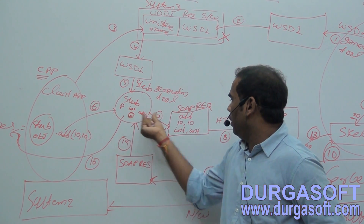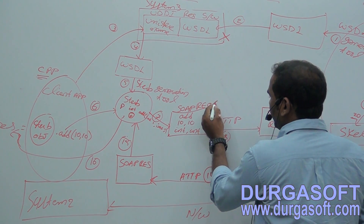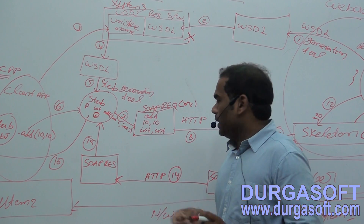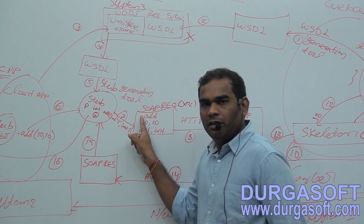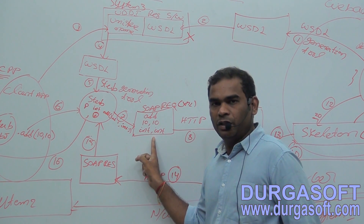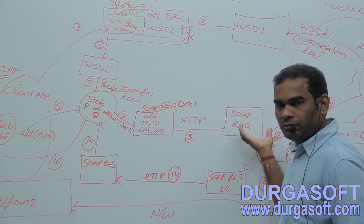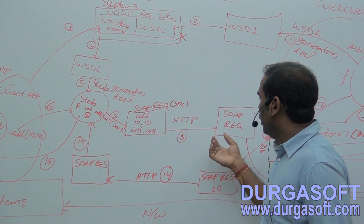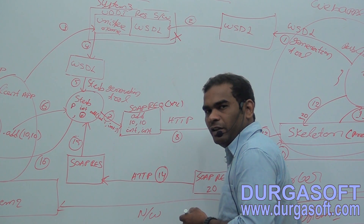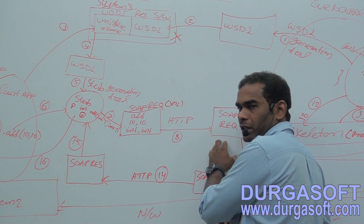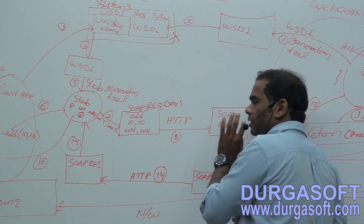The SOAP request is an XML document. In this SOAP request we have the name of the method we want to invoke, the parameter values, and the parameter types. This SOAP request needs to be sent to the service location. HTTP protocol will do that job — HTTP protocol is a transportation protocol that moves content from one location to another. In our web service architecture, HTTP protocol moves the SOAP request from the client location to the service location.